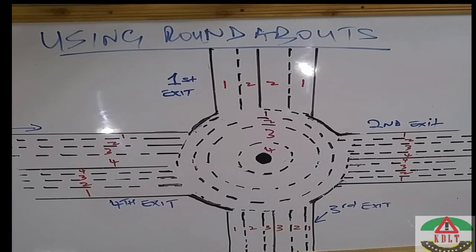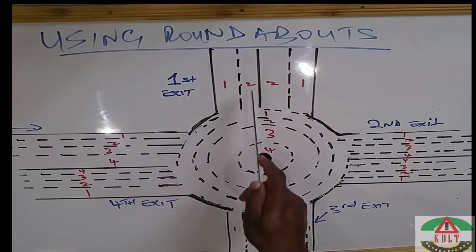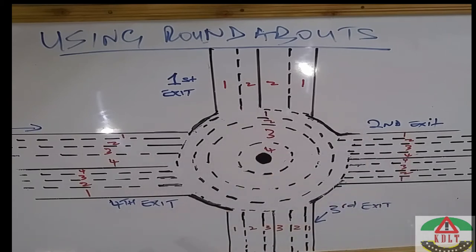This is a standard roundabout which you will find in our road structure. Almost all roundabouts will have four entries and four exits. Some may have three entries and three exits, but most roundabouts you'll encounter when driving on the Kenyan roads will have four entries and four exits.